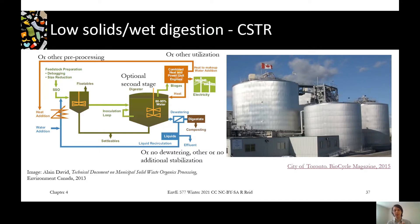Here it's showing one digester, though there could be two as we just looked over. Then we have our biogas coming off, going to utilizations, which we'll talk about later. Our digestate comes out and we might have to do a few things with that before we can apply it to the land and plug it into that circular economy for nutrients.